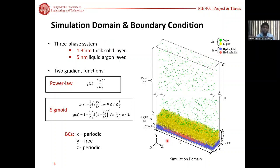This is our simulation domain. It's a three-phase system: there is a platinum surface at the bottom of the domain, above it there is liquid argon, and the rest is occupied by vapor argon. We have used two different gradient functions: power law and sigma function. In our boundary condition, x and z directions are periodic and y direction has been kept free.